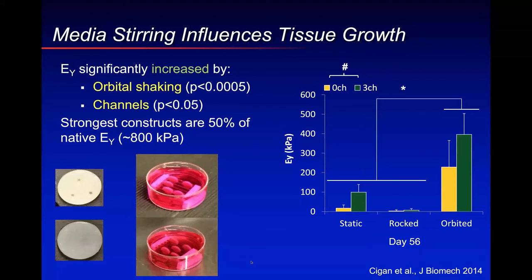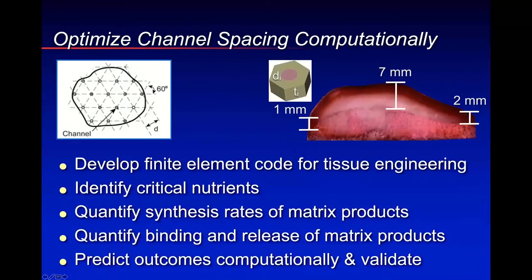We are engineers with a goal: to grow articular constructs the size of an articular surface. We needed to figure out how far apart channels should be, using a hexagonal pattern and FEBio simulations. But first we needed to know: what are the critical nutrients — is it glucose or something else? How much do cells produce matrix products based on nutrient availability? Do we lose most of the collagen and proteoglycans synthesized, or do we retain most of it? We wanted to predict these outcomes computationally and validate them against experiments.